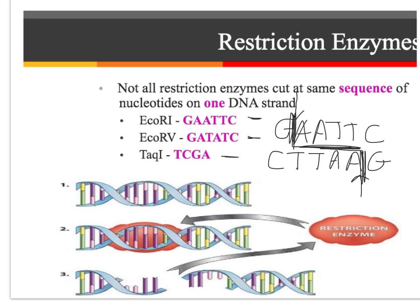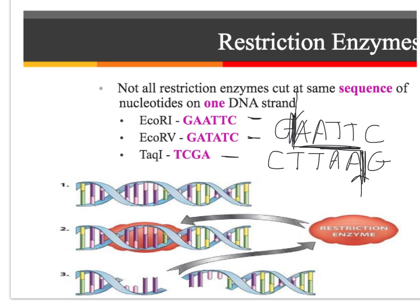Some restriction enzymes cut straight through the DNA strand, giving blunt ends. But most of them cut in a zigzag pattern, and that zigzag leaves what are called sticky ends. Sticky ends means there are free nucleotides — if we literally separated the two pieces, we would have TTAA exposed, so we could add a complementary strand of AATT to it. The blunt cut goes straight across, but sticky ends are the more common and useful type.